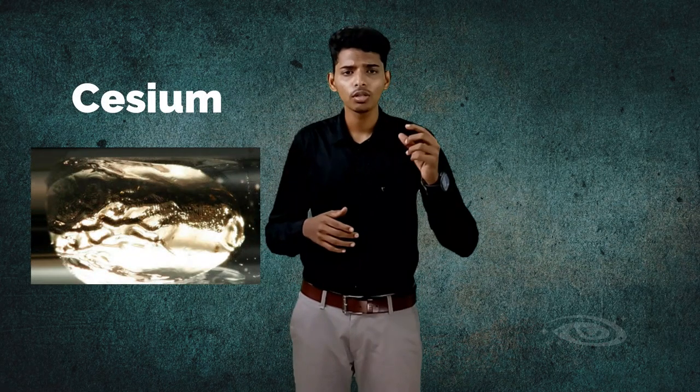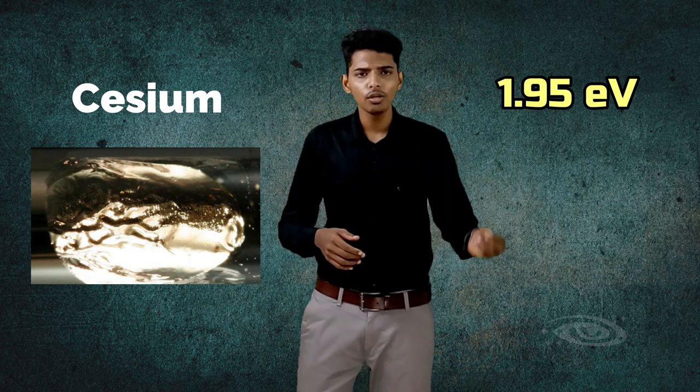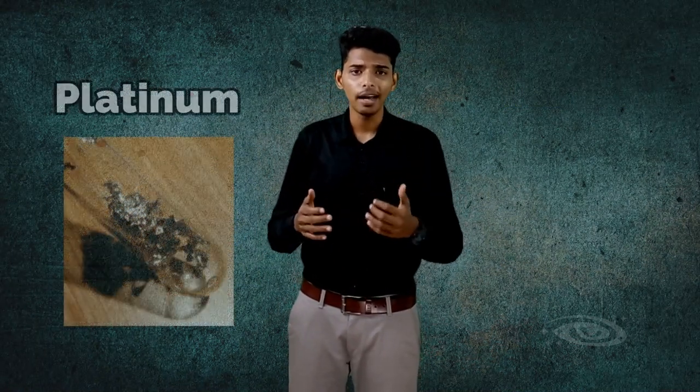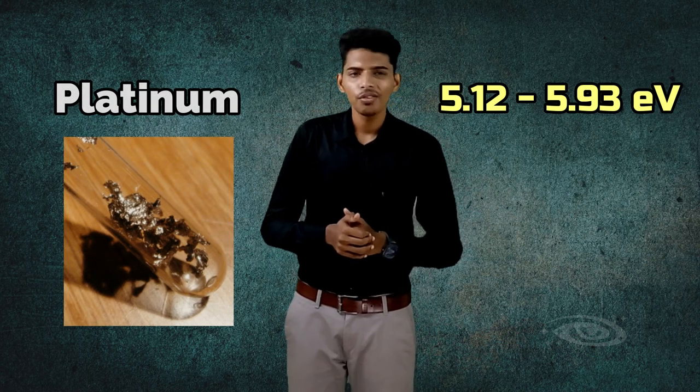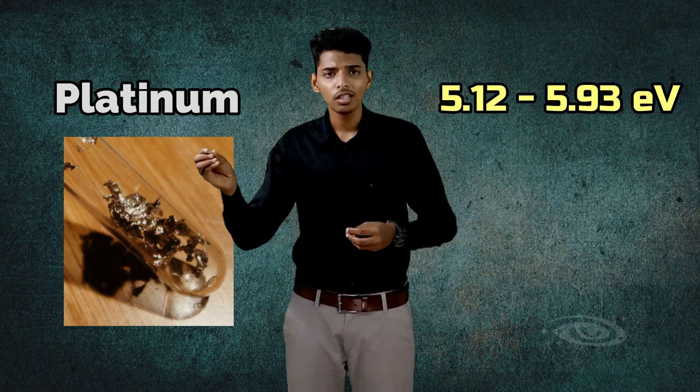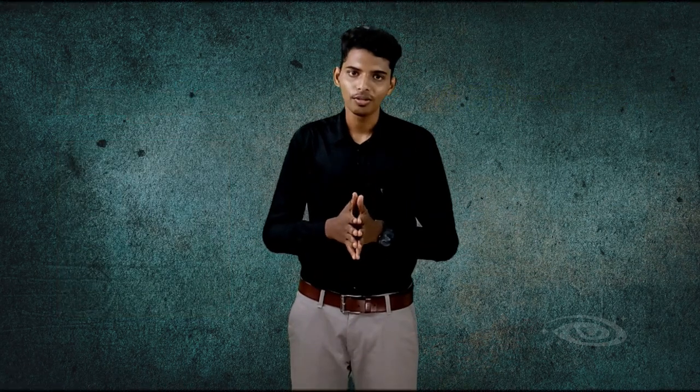To break the surface barrier, we give external energy to the free electrons to move them out from the surface. Giving a minimum energy to the electron to move it out from the surface is called the work function. Each metal has a different work function. The lowest work function metal is cesium at 1.95 electron volts, and the highest is platinum at 5.12 to 5.93 electron volts. Tungsten has a work function of 4.30 to 5.22 electron volts.